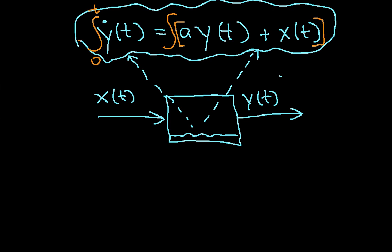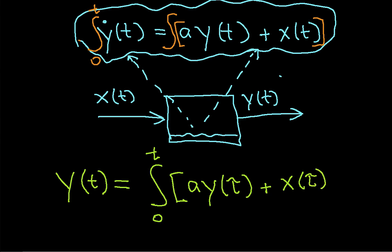When I do this, the integral of the time derivative is just y of t, and this is equal to the integral from 0 to t of ay of tau, I'm using tau here as a dummy variable of integration, if that bothers you don't worry about it, plus x of tau d tau.